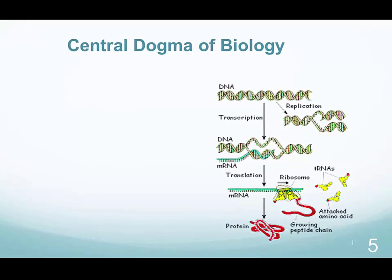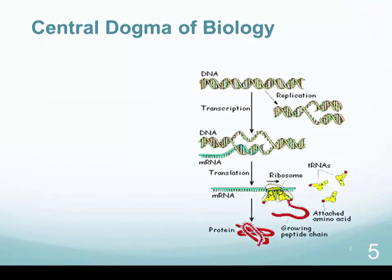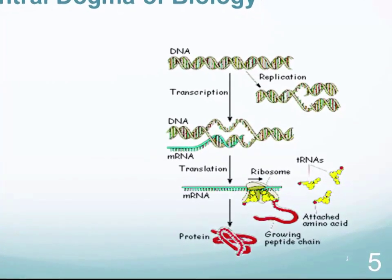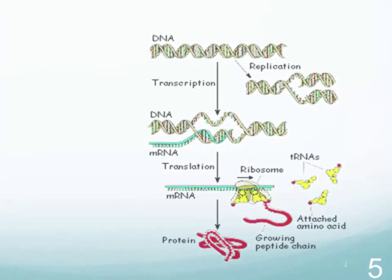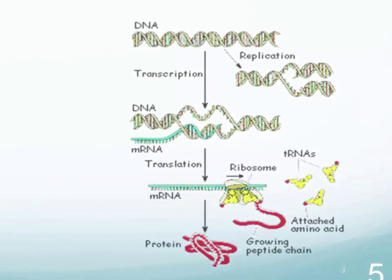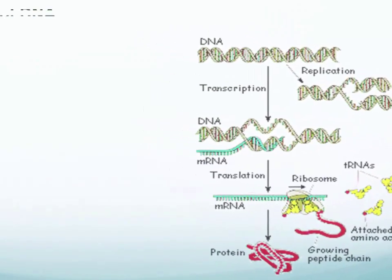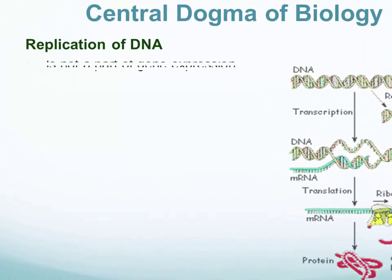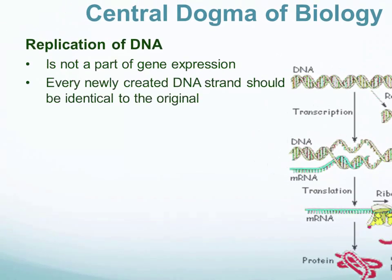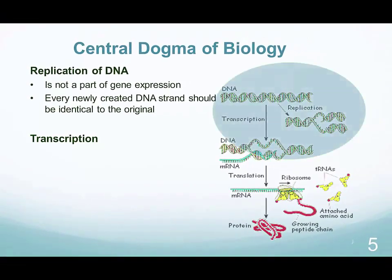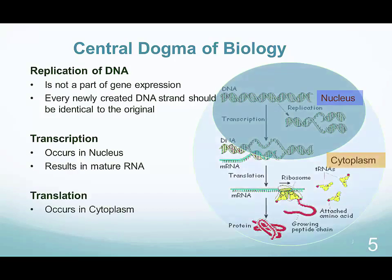Our previous understanding of the central dogma was focused on the transmission of information from the nucleus by the process of transcription of DNA into RNA, followed by the transport of RNA into the cytoplasm, where the RNA is translated into proteins, ending with the export of proteins from cells as effector molecules. The transcription occurs in the nucleus and results in mature RNA, which is then transported to the cytoplasm, where translation of molecules occurs, resulting in synthesis of proteins or polypeptides.